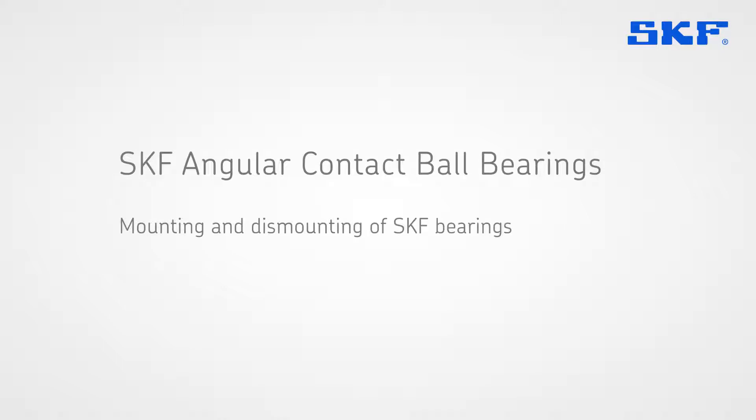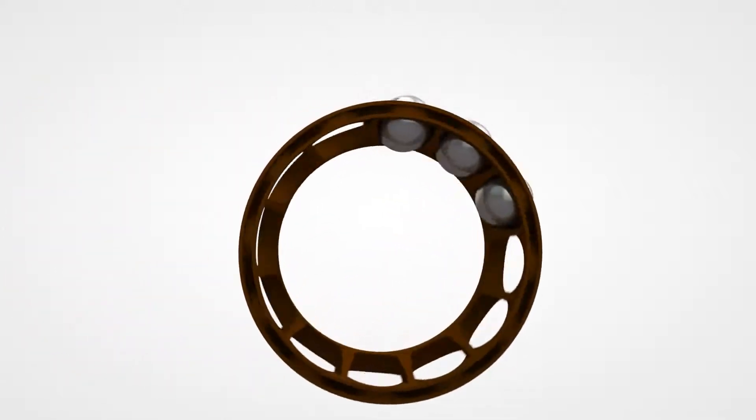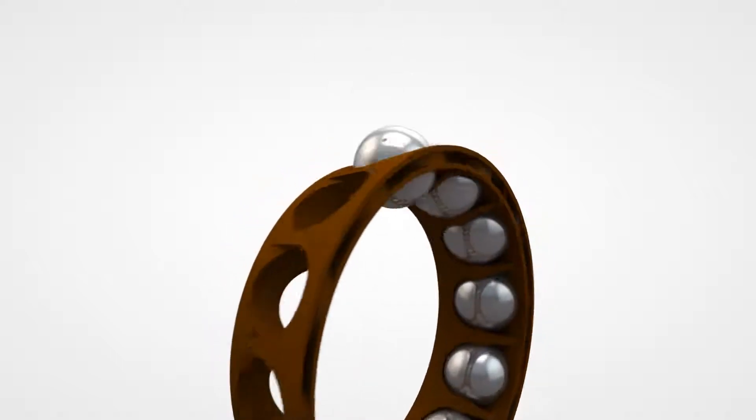This SKF training film is about single row angular contact ball bearings. An angular contact ball bearing consists of a retaining cage and a row of balls with an inner and outer ring.